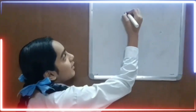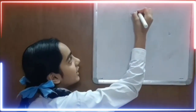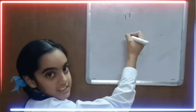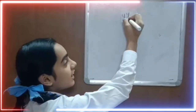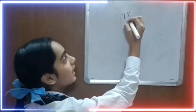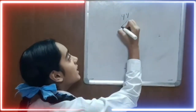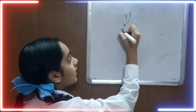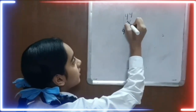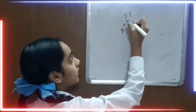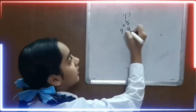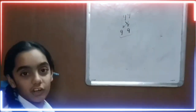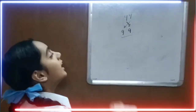I am going to take 99. When I reverse it, or when I write it from back, it remains the same. This is a palindromic number.